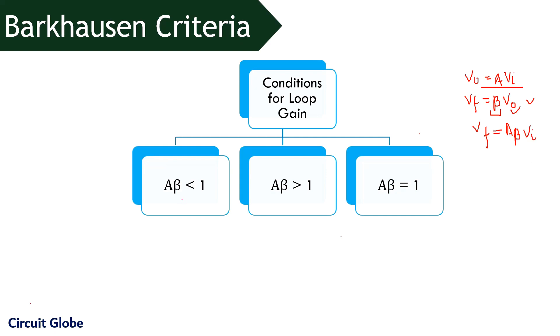Let us now consider the first condition where A beta is less than 1. So suppose we have considered A beta is equals to 0.5. For input voltage value, V-i is equals to 3 volts. Then in this particular condition, Vf will become 1.5 volts. This means that each time after the product of A beta into input voltage, we will get a lower value of feedback voltage. Due to this reason, the amplitude of the signal will also get reduced and after a particular point of time, the oscillation will die out.